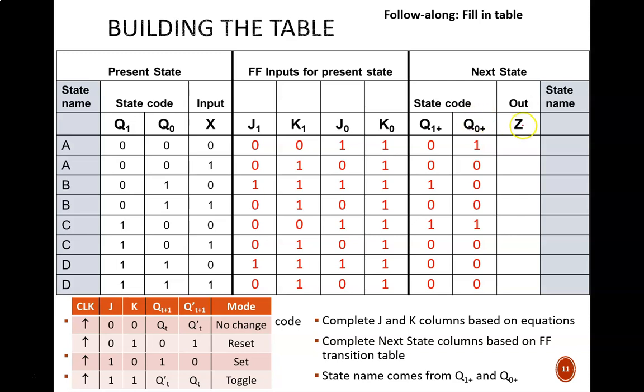This Z column could have been done a little earlier. We have a Boolean equation for Z, which is Z equals Q1 and Q0 and X prime, so only this row gives us a 1 for Z.